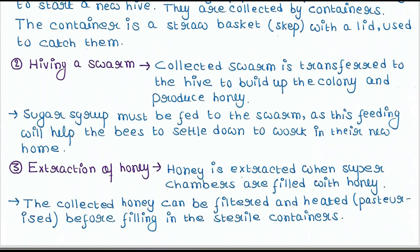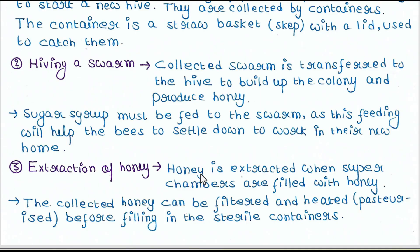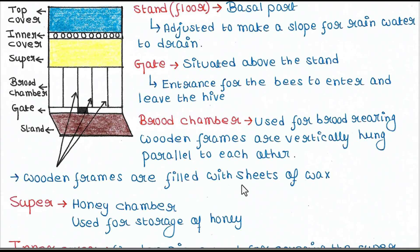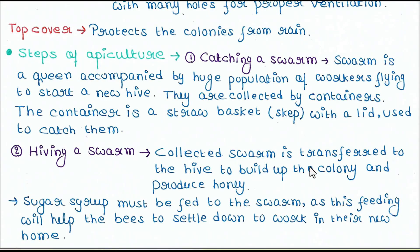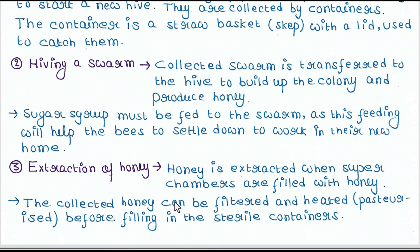Next is extraction of honey. Honey is extracted when the super chambers are filled with honey. We have seen that the super chamber is basically the honey chamber, so honey is collected from the super. The collected honey can be filtered and heated — this is also called pasteurization — before being filled into sterile containers.